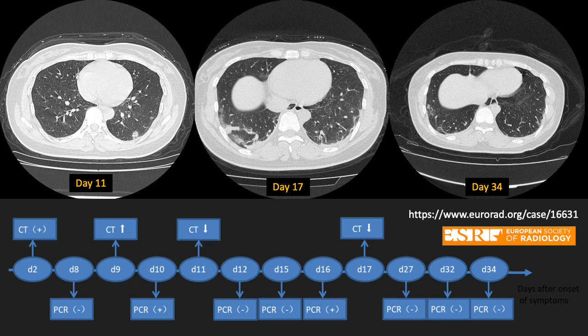Another study taken from the Eurorad.org case file series showed that on day two after the onset of coronavirus detection, the CT was positive and showed a positive ground glass opacity. At day 17 it had definitely increased, and at day 34 it reduced significantly. But more importantly, it gets more complex, because the imaging patterns continue to evolve throughout that period.